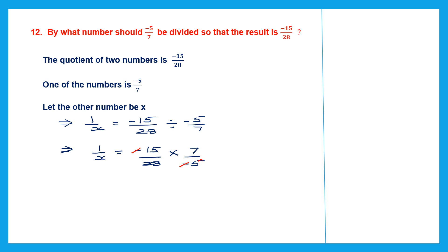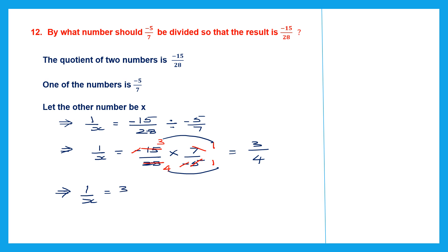So 1 by x equals minus 15 by 28 divided by minus 5 by 7. Division changes to multiplication — minus 5 by 7 we write as 7 by minus 5. We can cancel the minus signs, cancel 5 and 15 (5 threes are 15), and cancel 7 and 28 (7 fours are 28). Multiplying: 3 ones are 3 and 4 ones are 4, giving 3 by 4. So 1 by x equals 3 by 4.